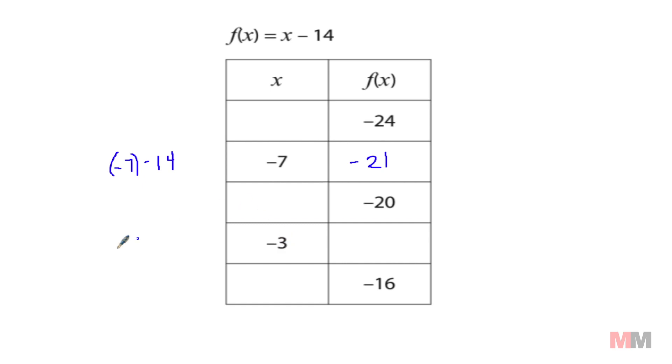Again, for this number, negative 3, you're using that main function, and then you're just plugging in your x value, negative 3. Negative 3 minus 14 is negative 17.